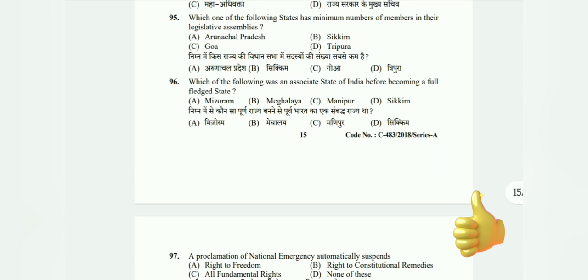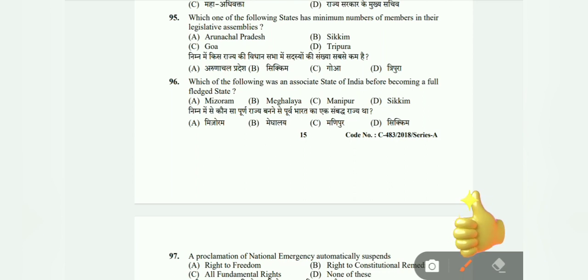Question 95: Which state has the minimum number of members in their legislative assembly — Arunachal Pradesh, Sikkim, Goa, or Mizoram? The correct answer is B, Sikkim. Question 96: Which of the following was an associate state of India before becoming a full-fledged state — Mizoram, Meghalaya, Manipur, or Sikkim? The correct answer is Sikkim.